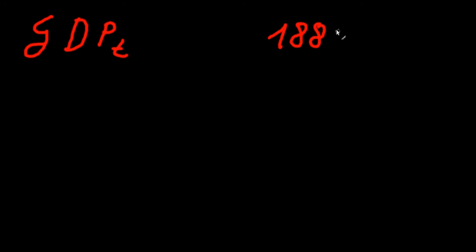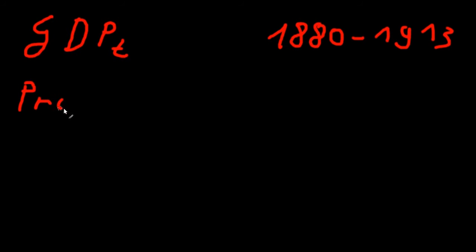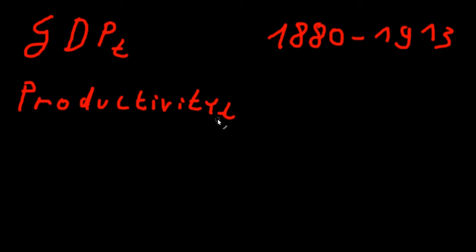Let's apply what we know about time series and construct a time series model. I'm going to construct a very simple time series regression model. We want to explain GDP at time t of the United States from 1880 to 1913. A productivity index might be a good explanatory variable, so we're going to explain GDP by productivity at time t. We've collected yearly data for both time series.